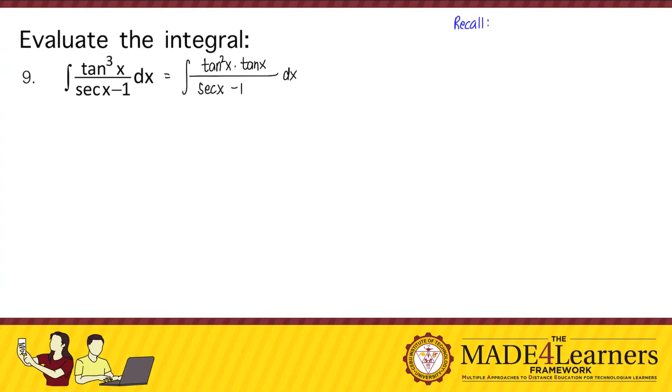So we recall our Pythagorean identity. Tangent squared u plus 1 equals secant squared u. Therefore, tangent squared u is equal to secant squared u minus 1.